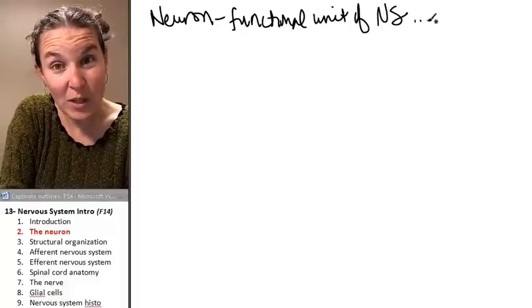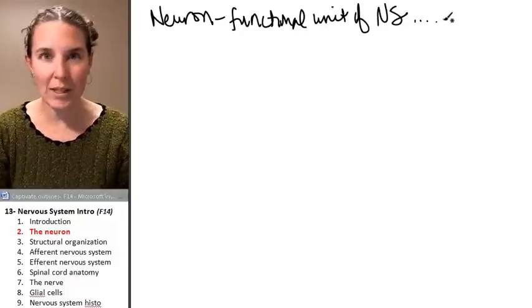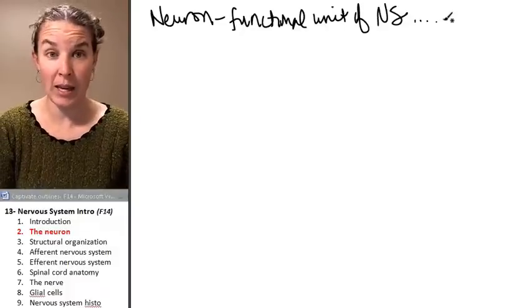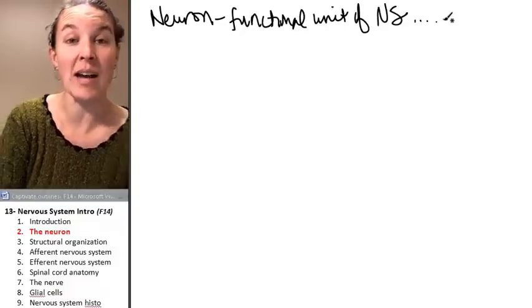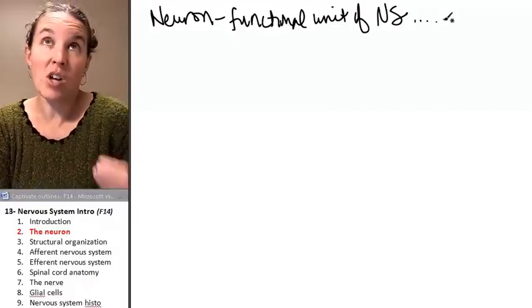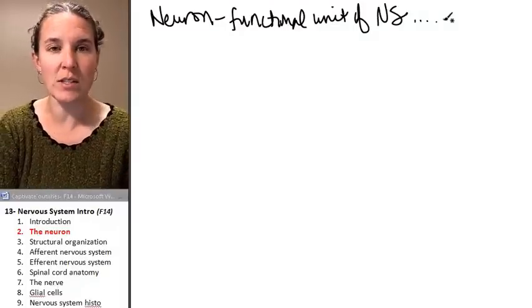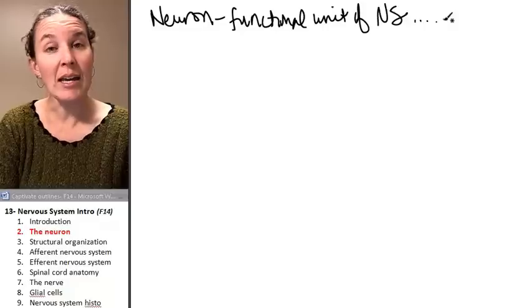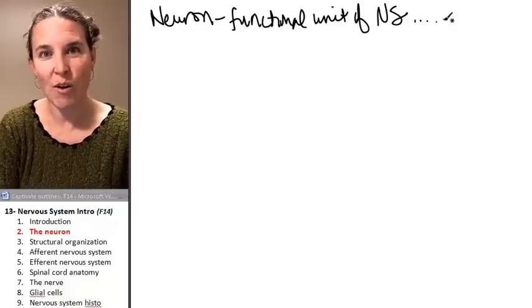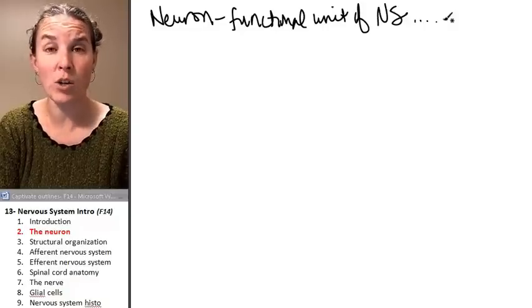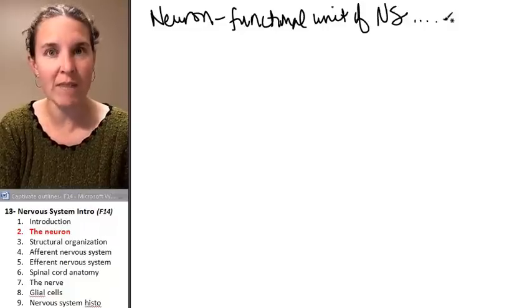And what we'll see as we progress, it's not the only cell in the nervous system by any stretch of the imagination. In fact, it's not the most common cell that you're going to find in the nervous system. However, it has the most obvious function because it's the one who's directly delivering information.